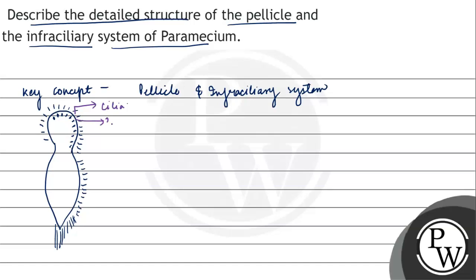This region is pellicle. And overall, the cytoplasm is divided into two parts. The outer peripheral region is termed as ectoplasm and the inward is called endoplasm, right? Now,